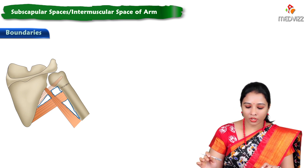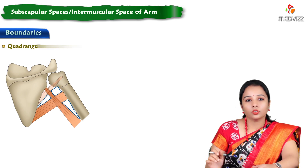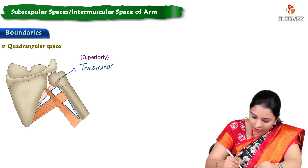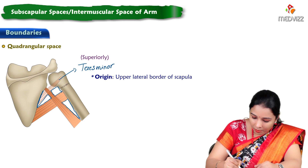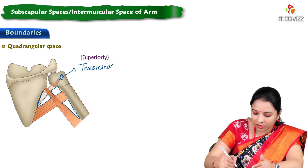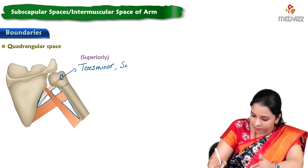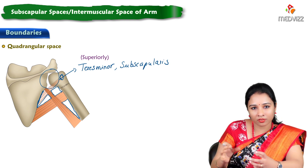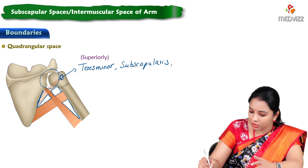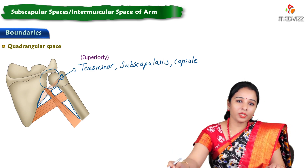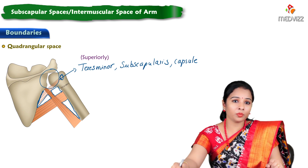The quadrangular space has four boundaries. Superiorly, we can see teres minor muscle, which originates from the upper part of the lateral border of the scapula and is inserted to the greater tuberosity of the humerus. Along with teres minor, there is a muscle from the anterior side — subscapularis — and also the capsule of the shoulder joint, or glenohumeral joint. Together, teres minor, subscapularis, and the capsule of the shoulder joint form the superior boundary of the quadrangular space.